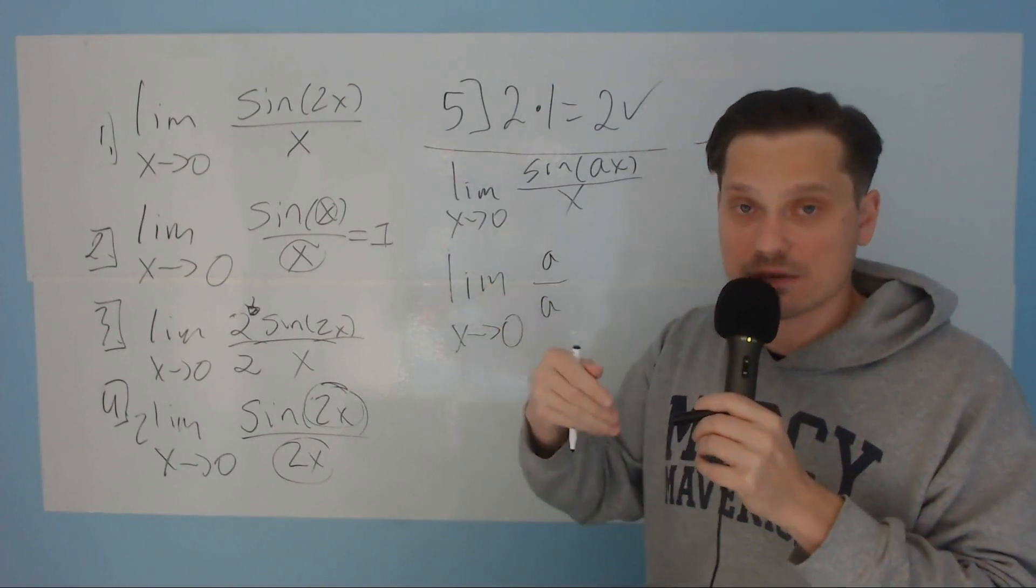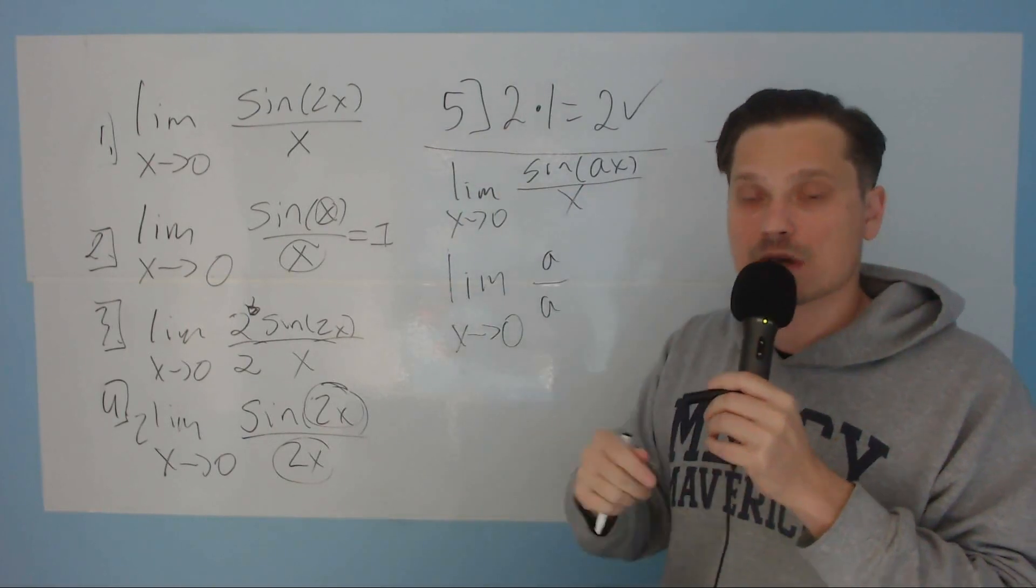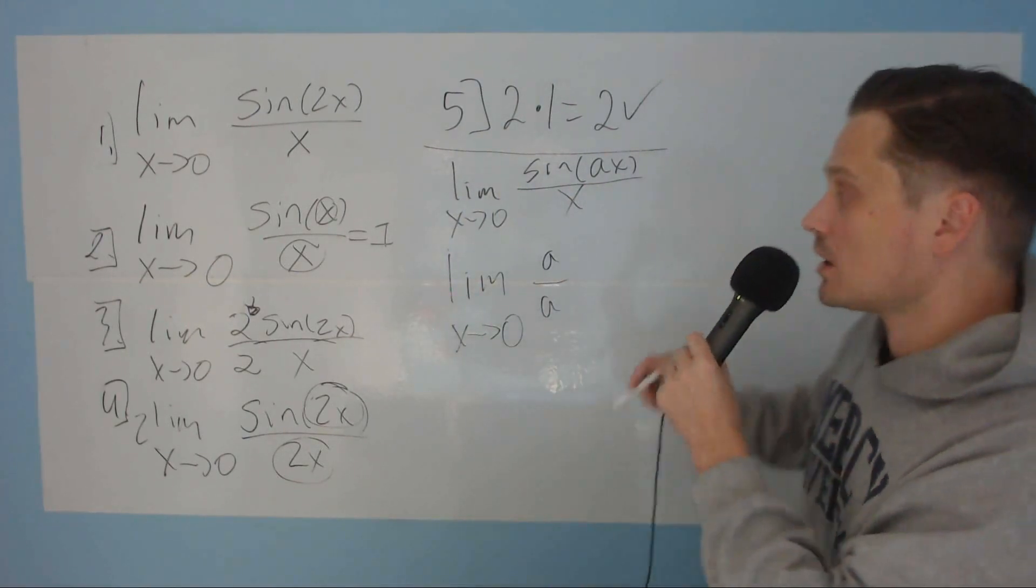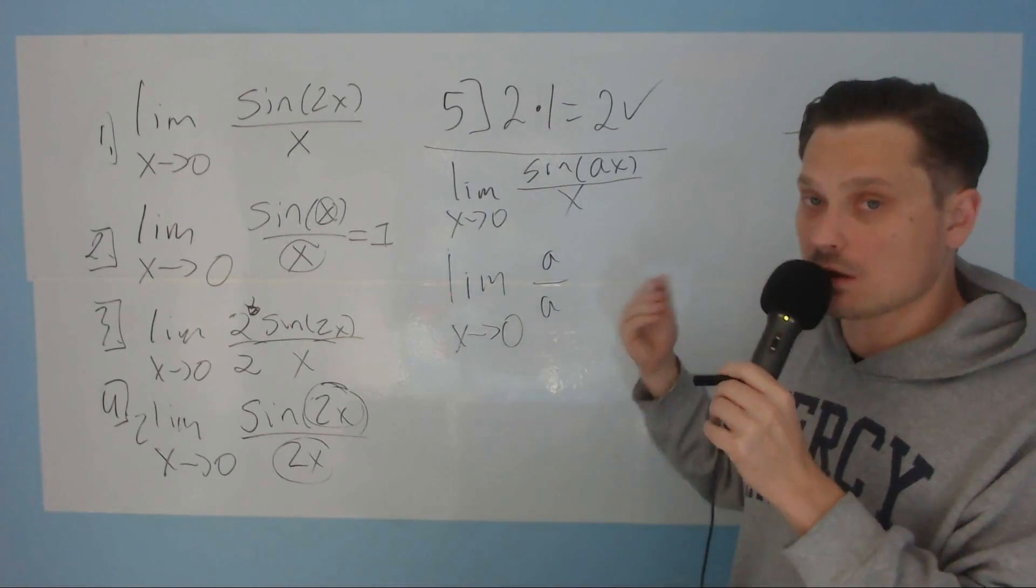Because if it's 5 over 5, it's 1. If it's 10 over 10, it's 1. If it's 20 over 20, it's 1, and so on. So you're just multiplying by 1, which you're always allowed to do.